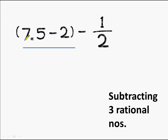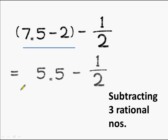Now let's see what happens in the case of subtraction. Here we are subtracting 3 rational numbers: 7.5 minus 2 minus 1/2. First we take the group of 7.5 minus 2, which gives 5.5, and then subtract 1/2. Since 1/2 equals 0.5, we get 5.5 minus 0.5, which equals 5.